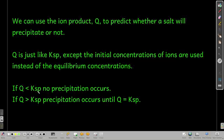We don't have enough ions in solution to precipitate the solid. But if Q is bigger than Ksp, then we get precipitation, and it keeps on precipitating until we get to the point where Q is equal to Ksp.